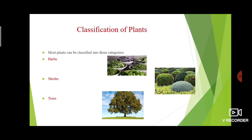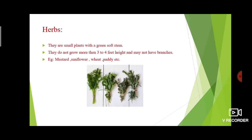Classification of plants — there are three categories: herbs, shrubs, and trees. First, herbs: these are small plants with a green soft stem. They do not grow more than 3 to 4 feet in height and may not have branches. Examples of herbs: mustard, sunflower, wheat, paddy, etc.